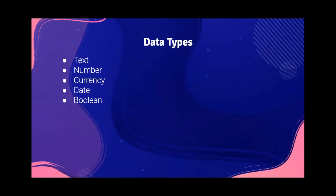Text is for any type of text that you have to input into the table. Number is for any type of number that you have to input. Currency is when you're using rupees, euros, or dollars for the rate or price of an item. Date is for expiration dates or any other dates that need to be input into the table. And boolean is for yes or no.